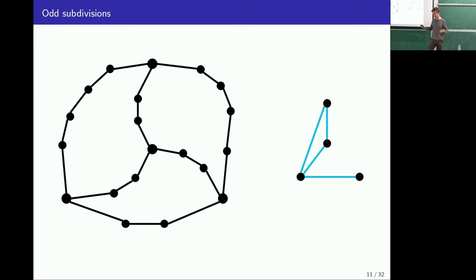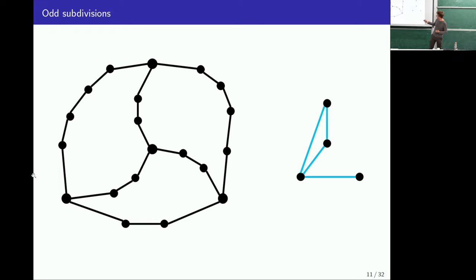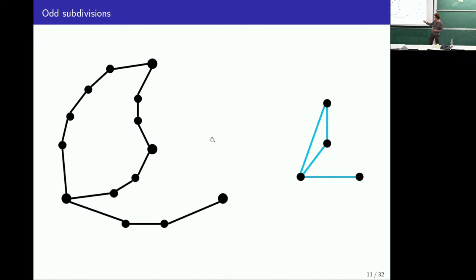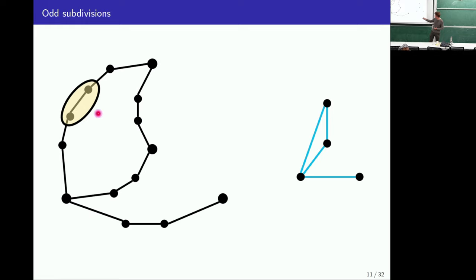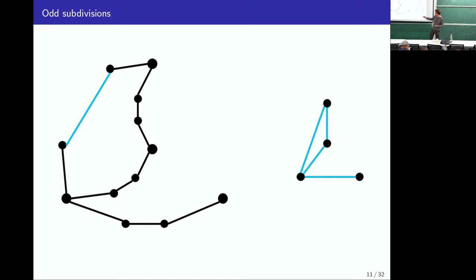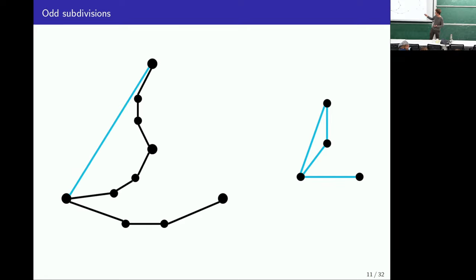Because of this, if we have an odd subdivision of a graph, then we can find it as a pivot minor. For instance, any proper odd subdivision of K_n is going to contain every n-vertex graph as a pivot minor. Say we're looking to find a four-vertex graph as a pivot minor and we have this odd subdivision of K_n. We delete the corresponding paths for edges we don't need, then shorten the remaining paths by pivoting and deleting repeatedly, until we've recovered the desired graph.